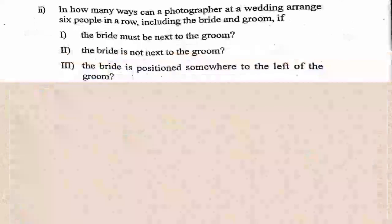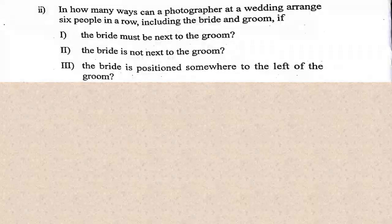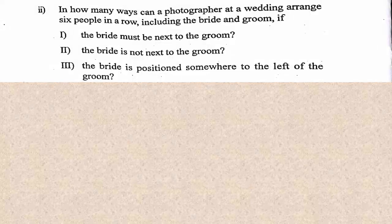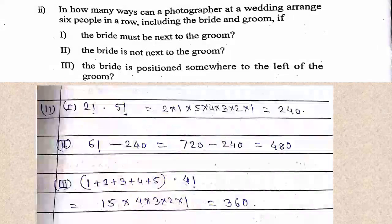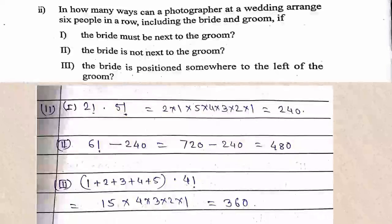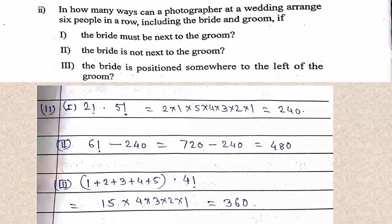Question 2: In how many ways can a photographer at a wedding arrange six people in a row including a bride and groom if (1) the bride must be next to the groom: 2! × 5! = 240; (2) the bride is not next to the groom: 6! - 240 = 720 - 240 = 480; (3) the bride is positioned somewhere to the left of the groom: (1+2+3+4+5) × 4! = 15 × 24 = 360.